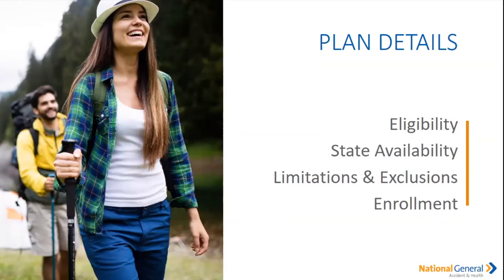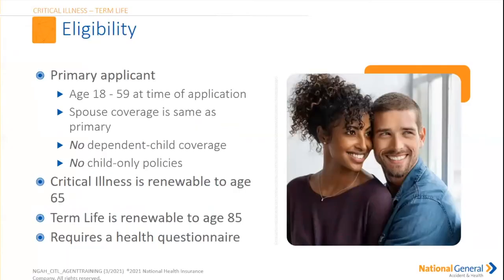Now let's talk about eligibility and state availability. The primary applicant on this particular policy needs to be between the ages of 18 and 59 at the time of application. Spouses can be covered on the same policy with the primary. Unfortunately, there is no child dependent coverage and no child-only policies. The critical illness is renewable up to age 65, and the term life is renewable up to age 85. Please note there is a health questionnaire for this particular critical illness policy.